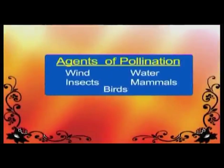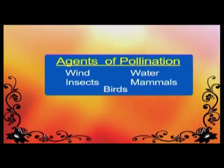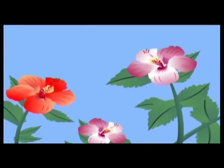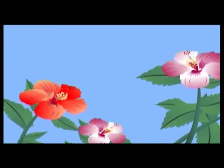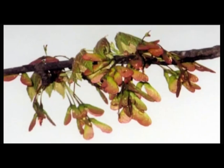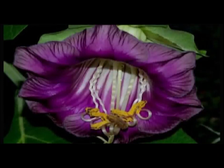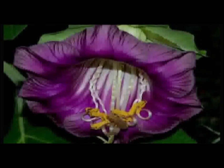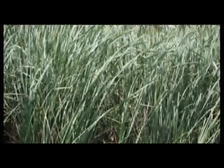Agents of pollination. The most common agents of pollination are wind, water, insects, mammals and birds. Wind blows away pollen grains from the anthers of one flower to the stigma of another flower. Such flowers are small, not brightly colored, do not produce nectar, and have very light pollen grains so that they can easily be blown away with the wind. Anthers are large and loosely attached. Stigmas hang out of the flower to trap the pollen grains. Some examples are wheat, rice, maize and rye grass.